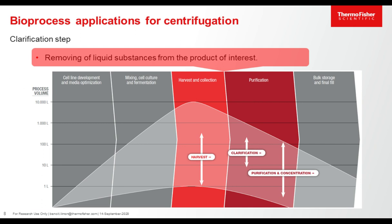In the downstream process, clarification is the removing of liquid micro-sized substances from the product of interest. Process volume may range from 100 milliliters to 1,000 liters, depending on the process scale and the harvest method. The centrifuge may play an important part in the clarification step.